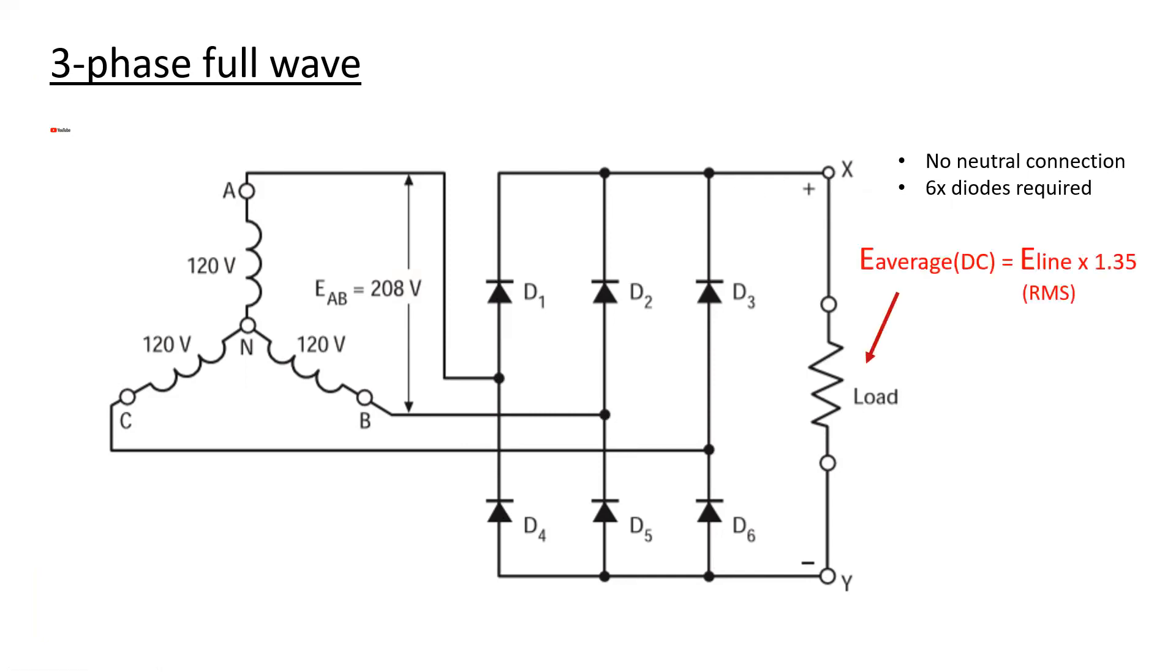The average DC voltage that we would expect to measure across a load in a full wave three-phase rectified system is the line voltage times 1.35. The line voltage in this system being 208 times 1.35 equals 280.8 volts DC.